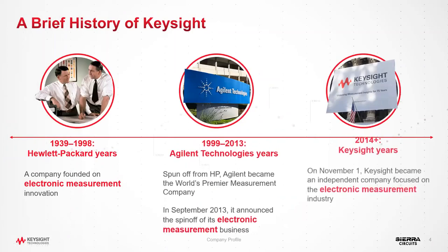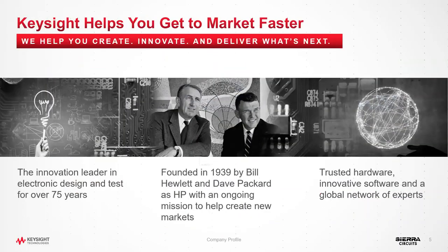Keysight started as the Hewlett-Packard company back in 1939 with Bill and Dave, then we spun off HP and started Agilent, and then over the past five or six years we spun again and went to Keysight. I've been with the company for about 25 years, starting with HP. Our whole idea as a test and measurement company has come full circle back to the original founders' intention, and now it feels good to be back in the Keysight name.